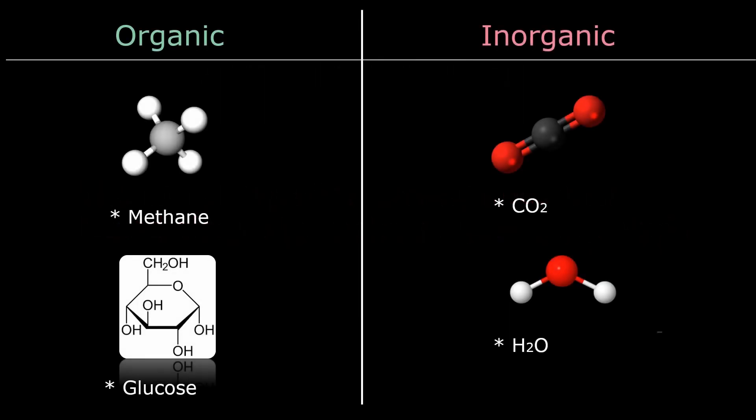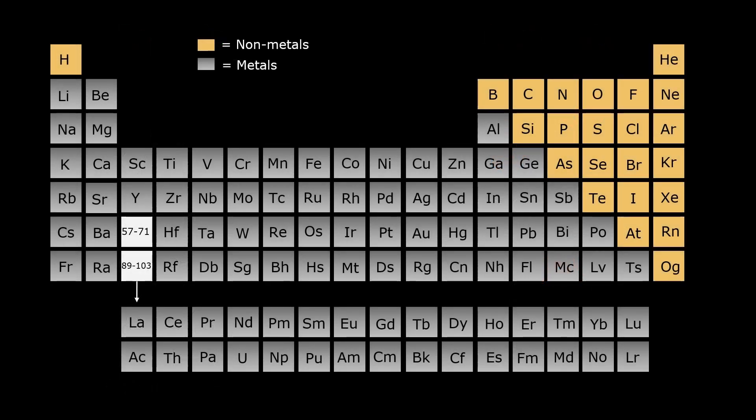Now let's take a look at the periodic table to better understand the scope of inorganic chemistry. Carbon, being a non-metal, predominantly forms bonds with other non-metals like oxygen, nitrogen, and other carbon atoms.